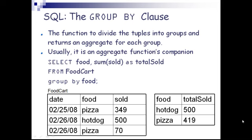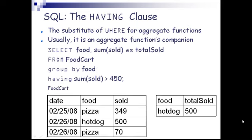The food_cart table has three fields: date, food, and sold. Using GROUP BY, we get a table of food and total_sold — hot dog: 500, and pizza: 419. The HAVING clause is the substitute of the WHERE clause for aggregate functions and is usually an aggregate function's companion. Example: SELECT food, SUM(sold) AS total_sold FROM food_cart GROUP BY food HAVING SUM(sold) > 450. Only the row with hot dog (500) will be selected.